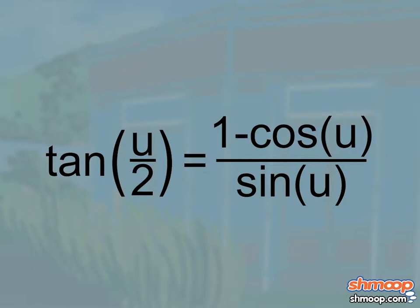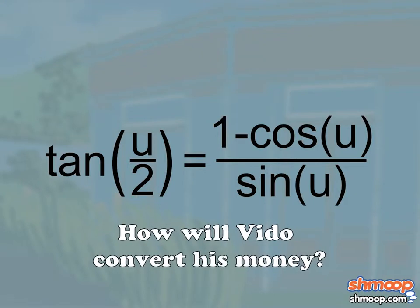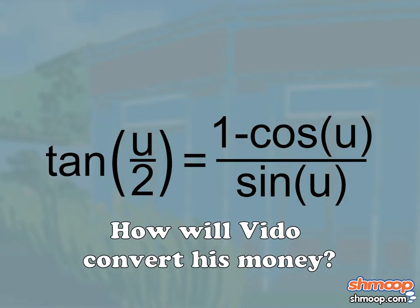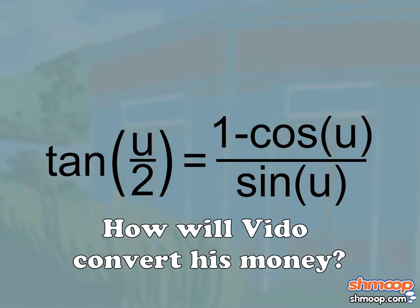Tangent of u over two equals one minus the cosine of u over sine of u. How will Vito convert his money to the correct amount for his much-needed triple-latte?